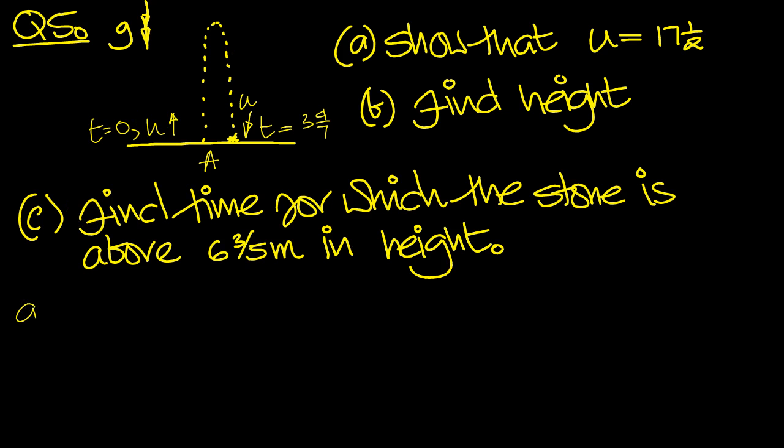OK, so we know the total time is 3 and 4 sevenths, so let's have a look at that. So part A then, we'll use the equations of motion. So we know the final and initial velocities, and we know the time.